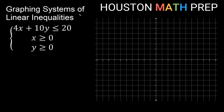My first system of inequalities has three inequalities: 4x plus 10y is less than or equal to 20, and then two statements common in business math or finite math class — x is greater than or equal to 0 and y is greater than or equal to 0. I want to explore these last two first and then come back to the first one.